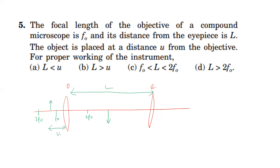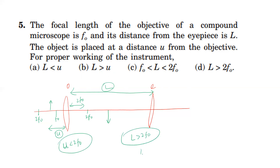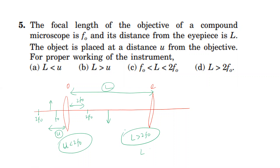If the object is located such that the object distance is less than 2F0, then the distance between the object lens and the eyepiece is greater than 2F0. If u is less than 2F0, then the distance between the object and the eyepiece is greater than u, and 2F0 is greater than u.